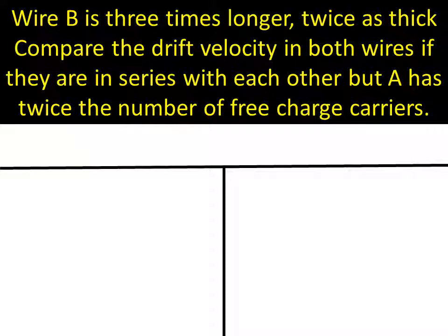So we have wire B is three times longer, twice as thick. Compare the drift velocity in both wires if they are in series with each other, but A has twice the number of free charge carriers.